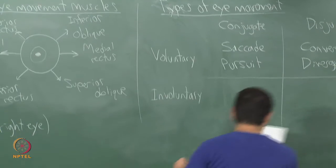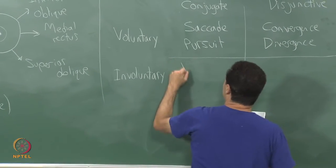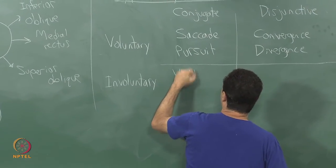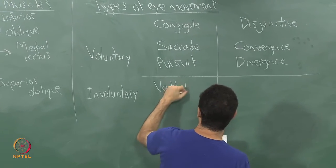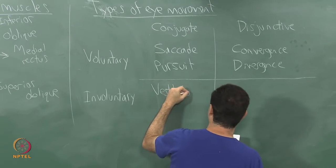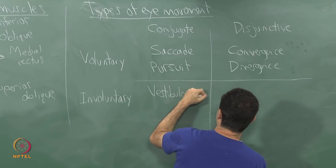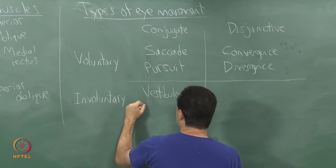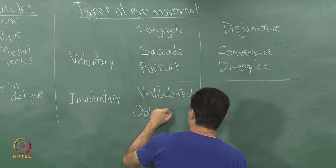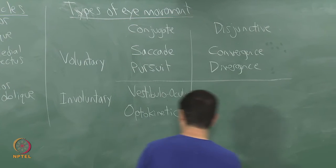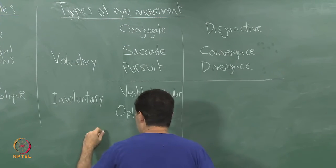As far as involuntary we have vestibulo-ocular and optokinetic and one more here microsaccades.